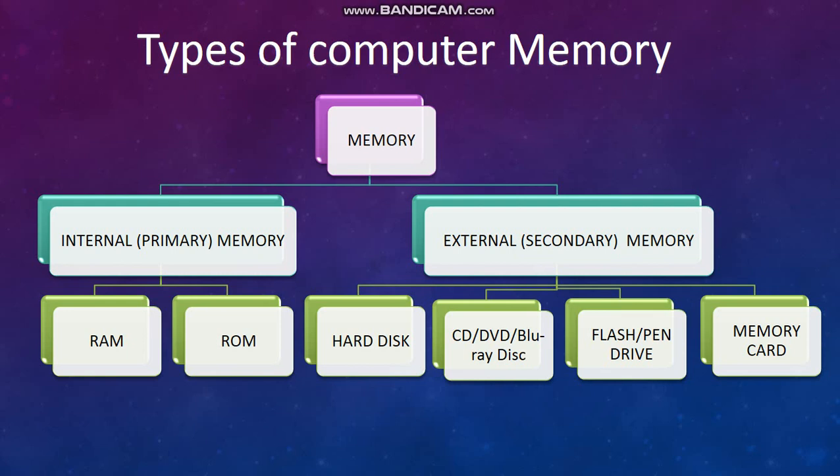First you have to understand the types of computer memory. Memory are normally two types: internal memory and external memory. In internal memory we have RAM and ROM. In external memory we have hard disk, CD, DVD, Blu-ray disk, flash drive, pen drive, and memory card. All of this memory we will discuss in this topic.